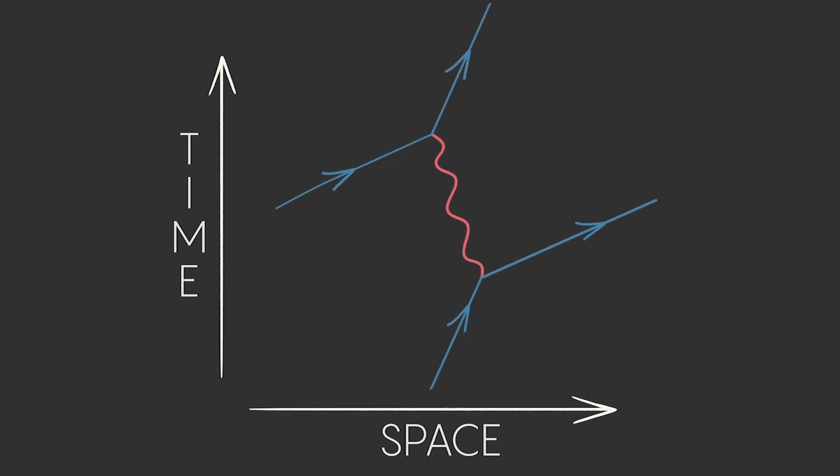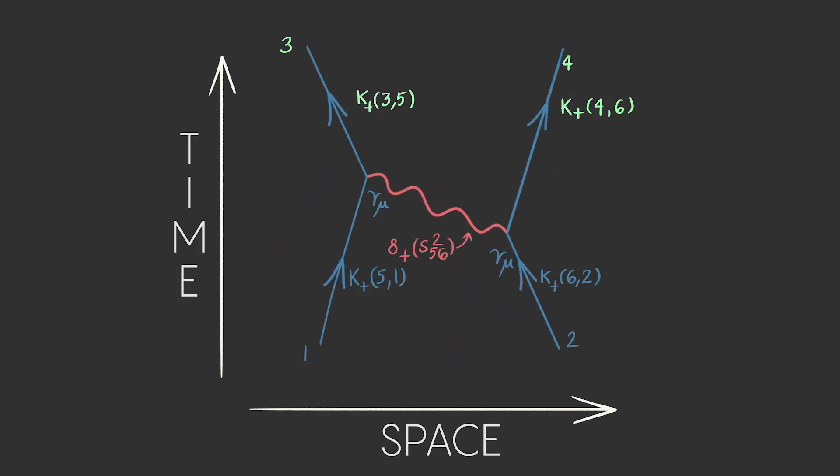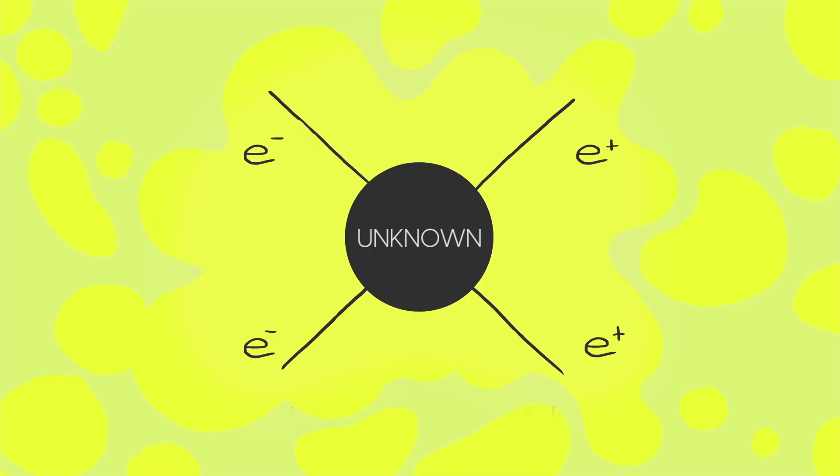Each section of the diagram corresponds to part of a QED equation. The stories of these scatterings begin at the in and out states of the interaction. Across those points, energy, momentum, and charge should be conserved.